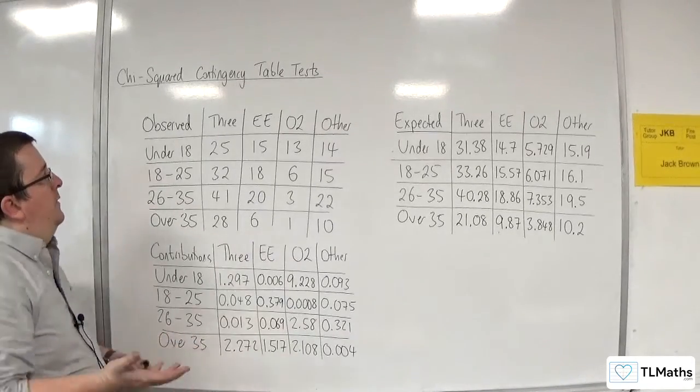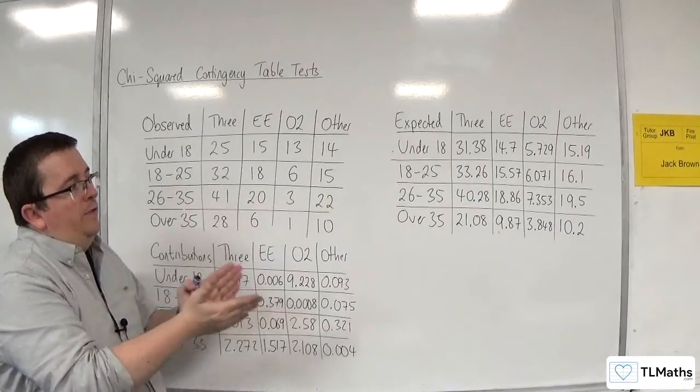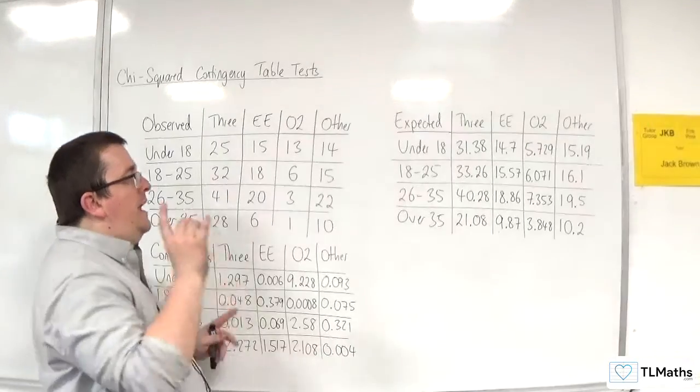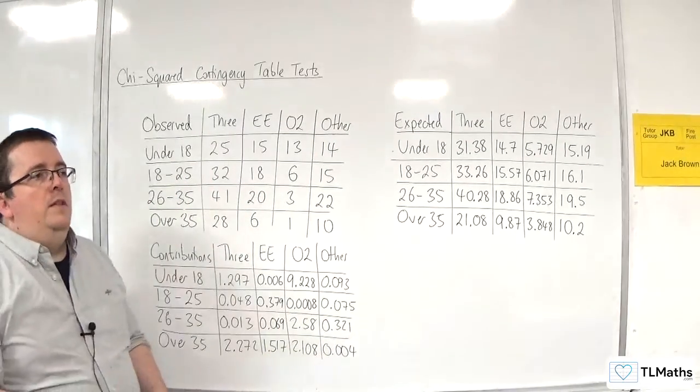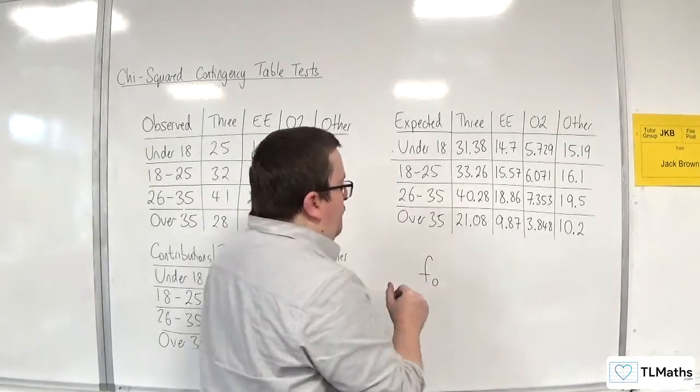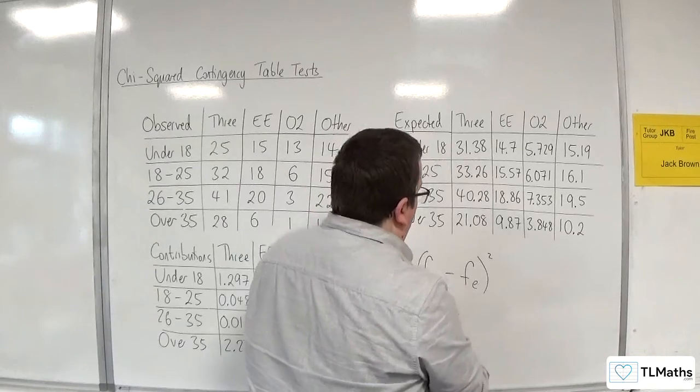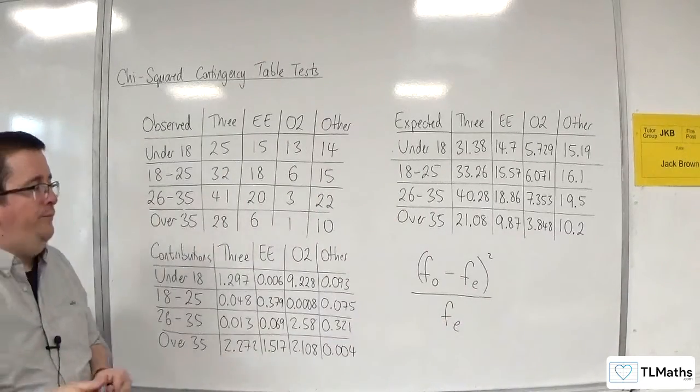Because essentially the expected frequencies are the bit that's informing you that there may well be an issue. The issue comes because if the expected frequency is small, then think about the calculation that you do. You do the observed frequency, take away the expected frequency squared, and then divide that by the expected frequency.